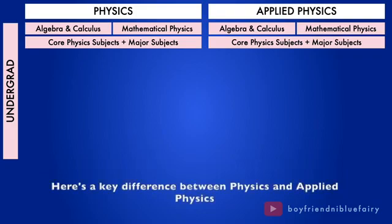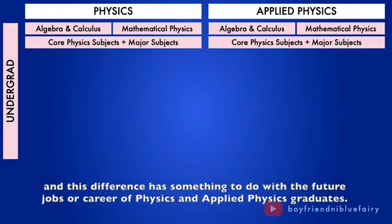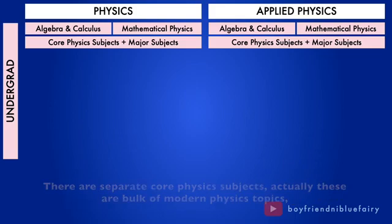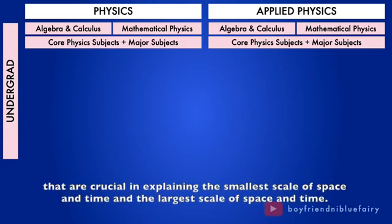Here's a key difference between physics and applied physics. And this difference has something to do with the future jobs or career of physics and applied physics graduates. There are separate core physics subjects, actually these are bulk of modern physics topics, that are crucial in explaining the smallest scale of space and time and the largest scale of space and time.